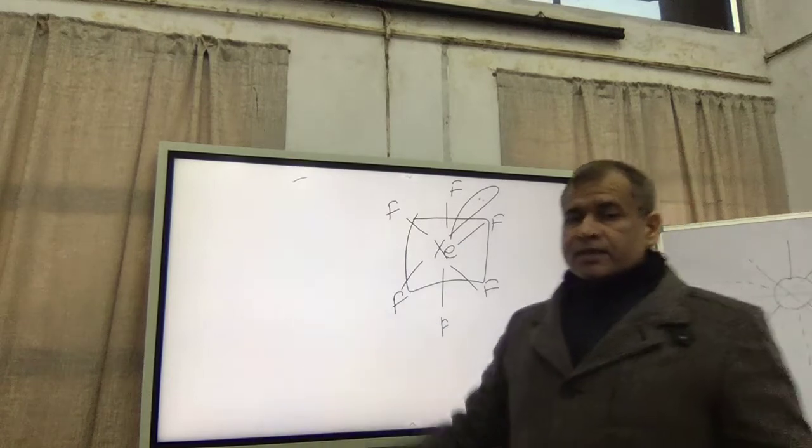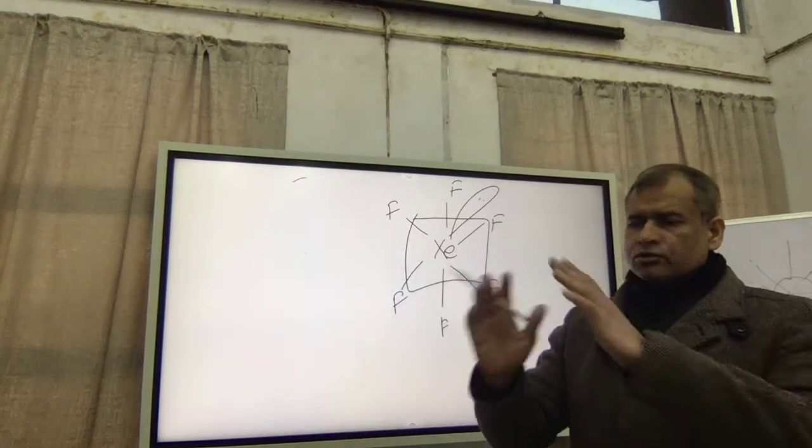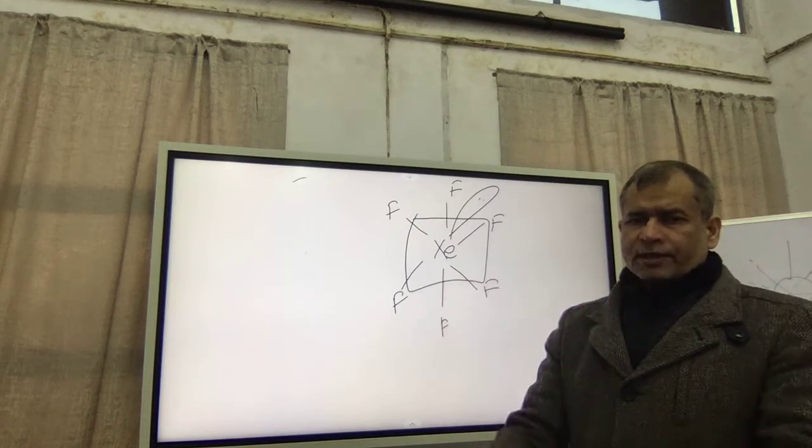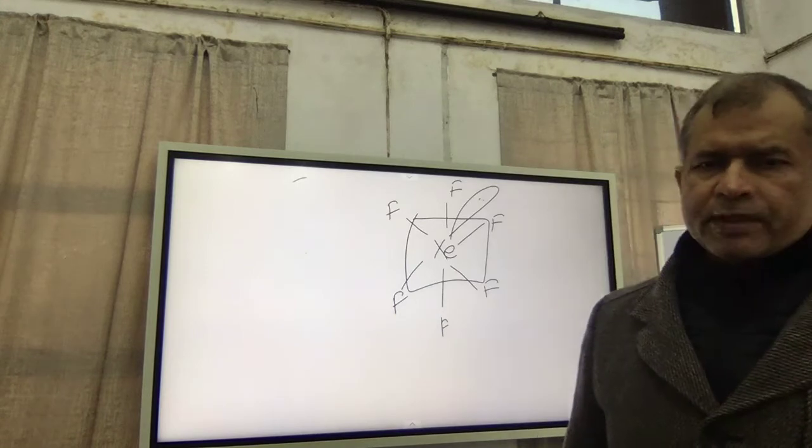So, of course, the lone pair, when it is there, it will repel the other bonds. So the octahedral gets distorted. Similarly, in case of ClF3, when you solve, you will get TBP. It must be sp3d hybridization of the Cl atom.